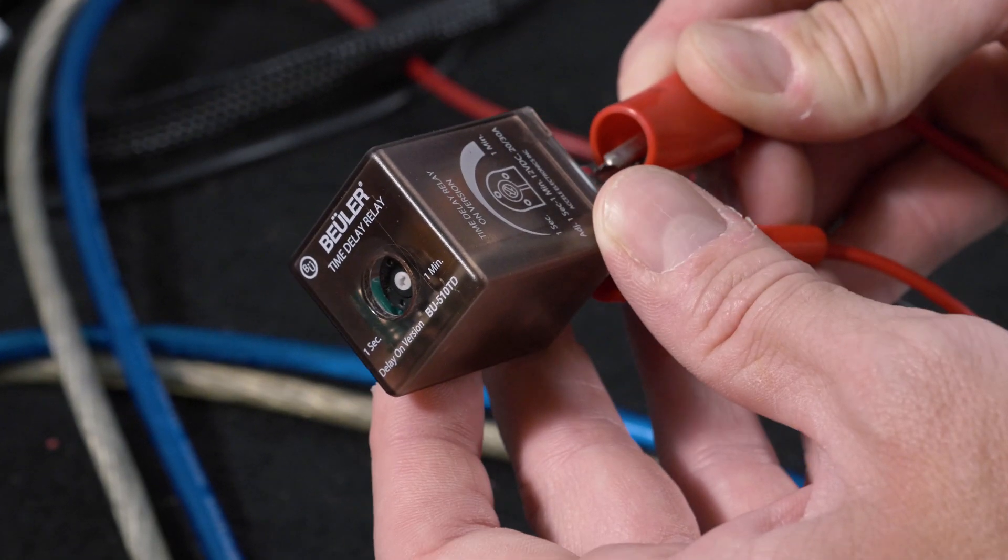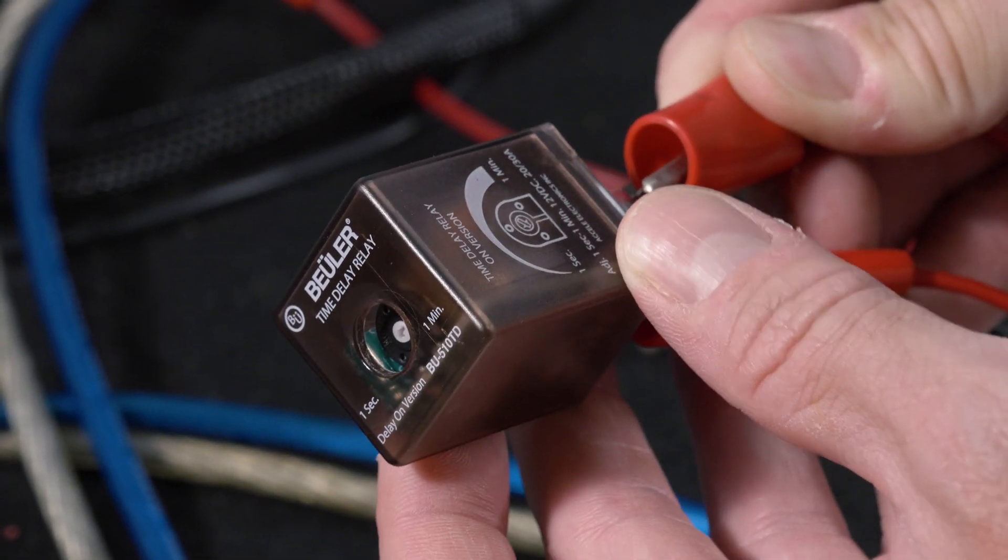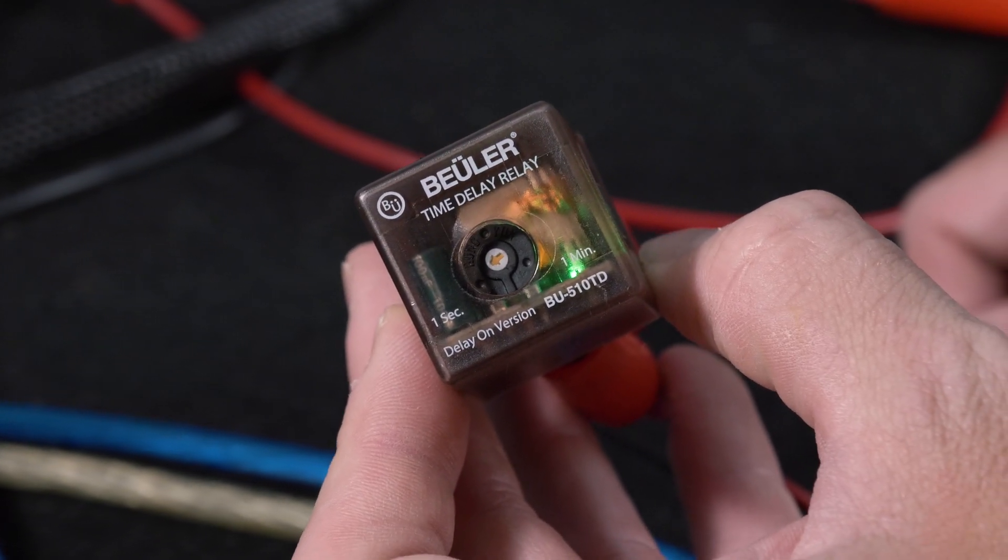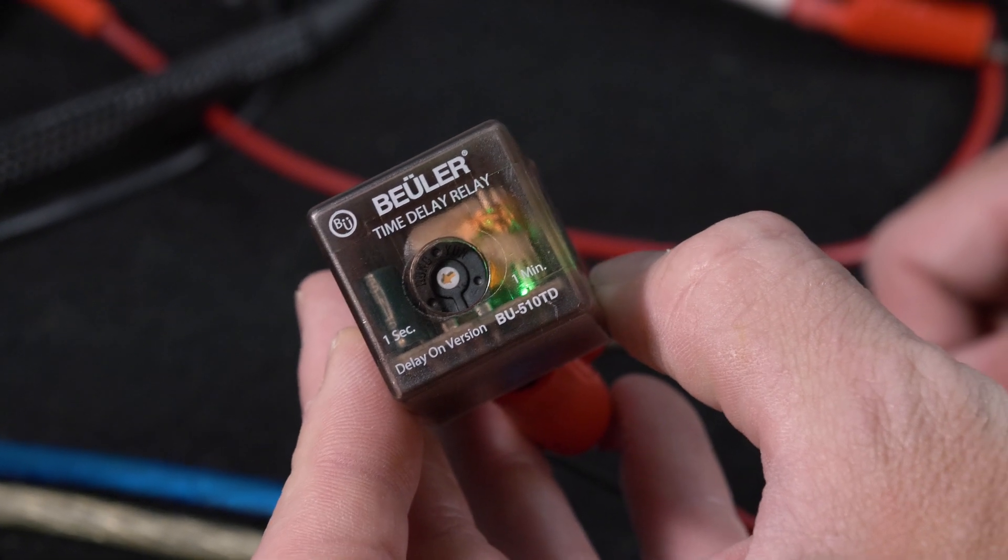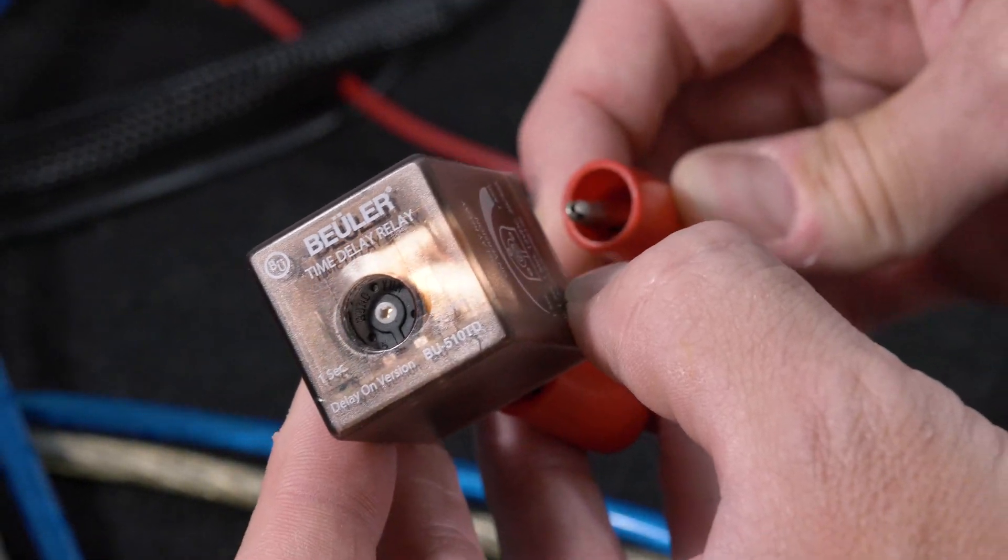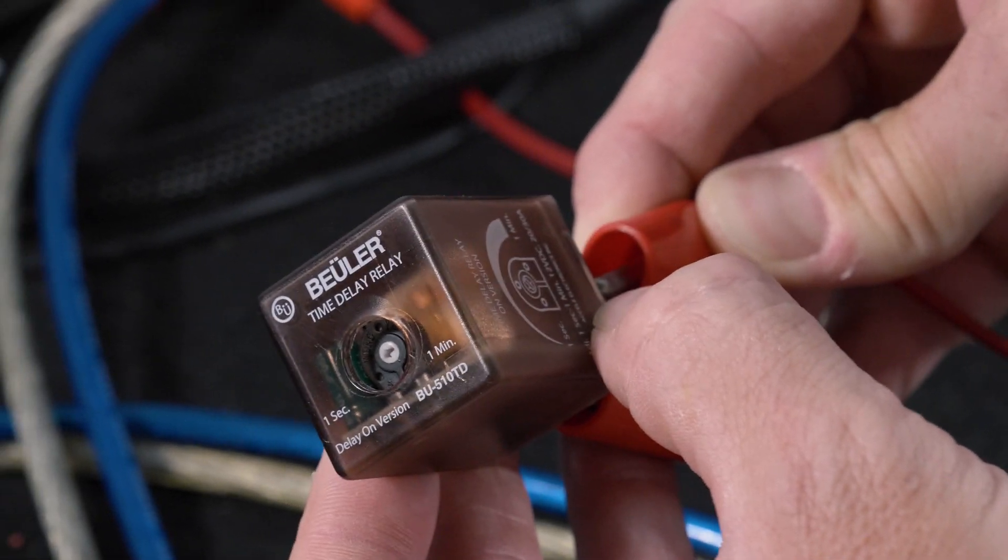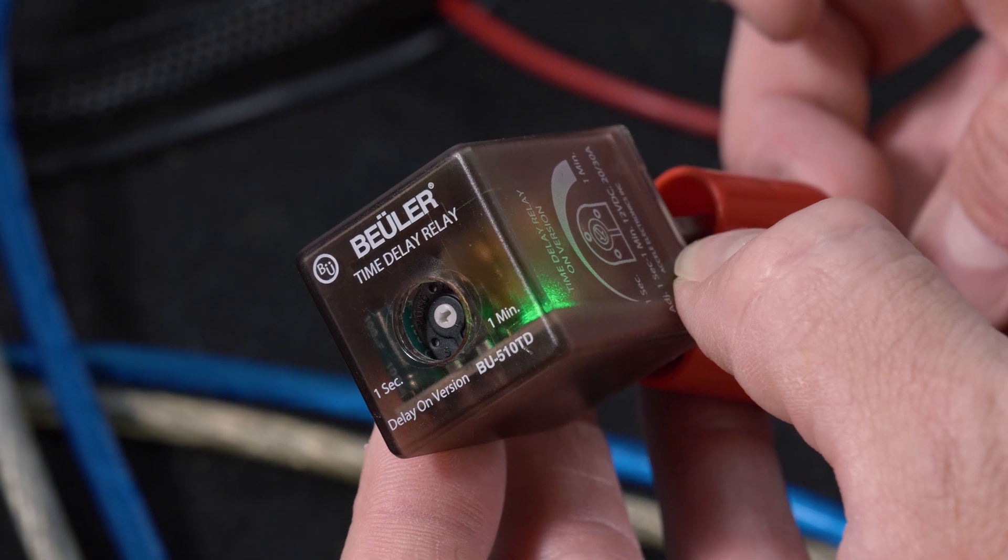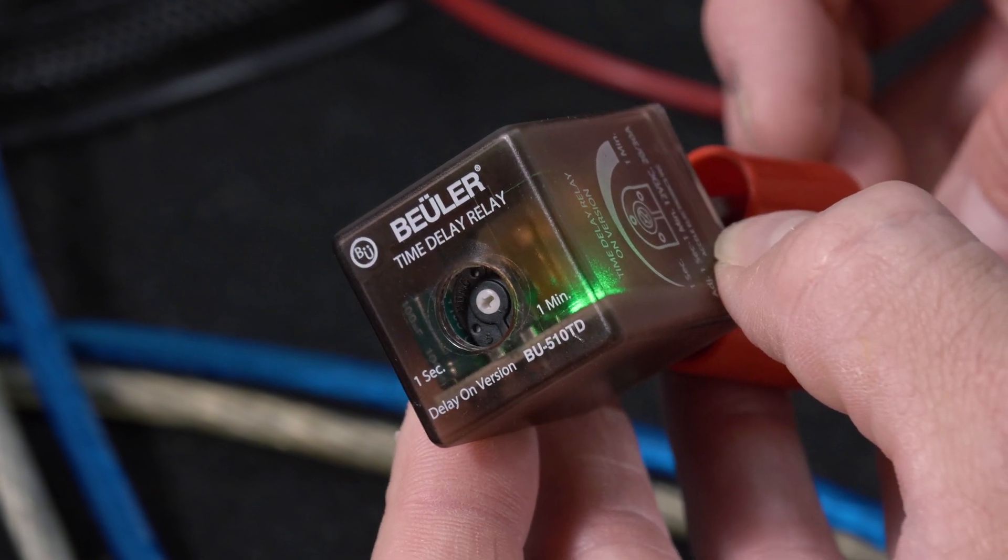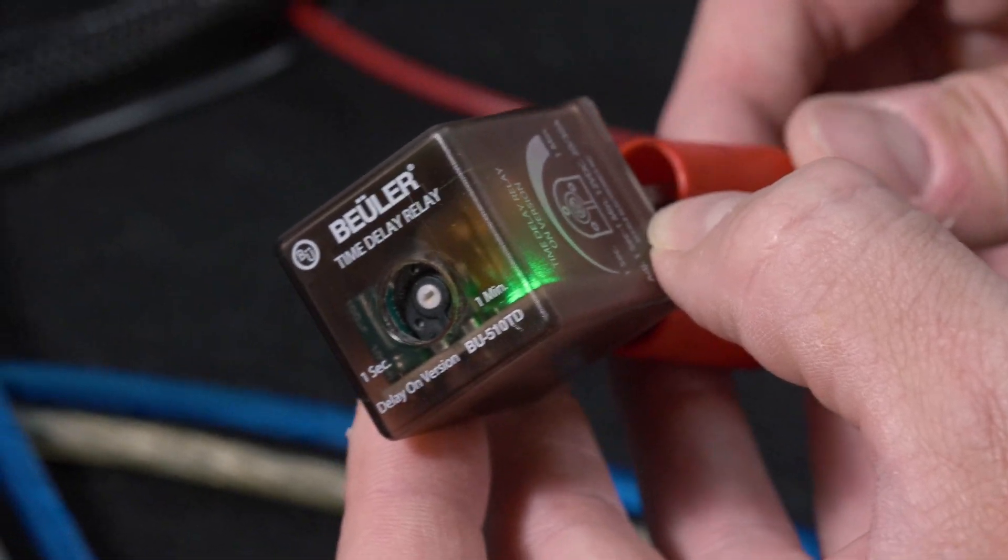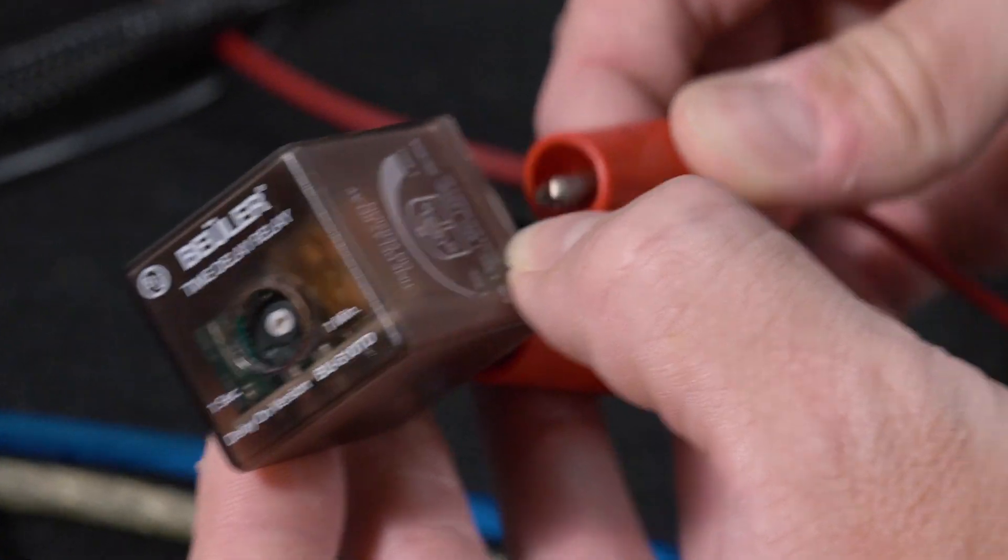So we have the relay powered. Now what we'll do is put our 12 volt trigger and you'll see that the relay clicked on. So we'll repeat it. So the relay will only stay on as long as the trigger is present. The minute you remove the trigger, the relay turns off.